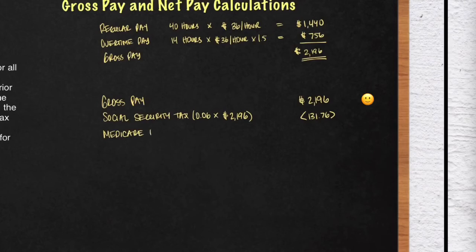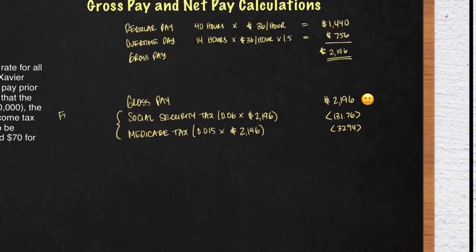The next deduction is Medicare tax. In this example, it is 1.5%. So you want to multiply that by the gross. And then you should get $32.94. An important note here. Our first two deductions, social security tax and Medicare tax, is required by a certain law. And that specific law is called the Federal Insurance Contributions Act. It's commonly referred to as FICA.